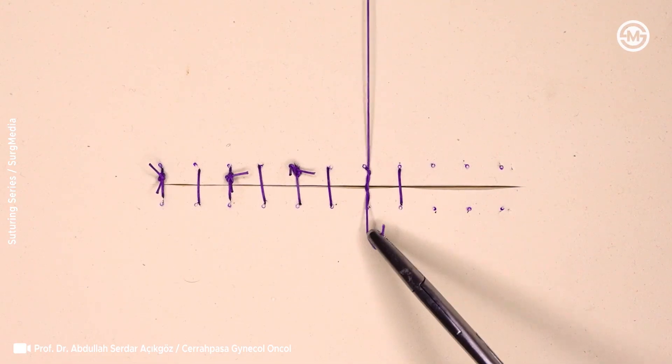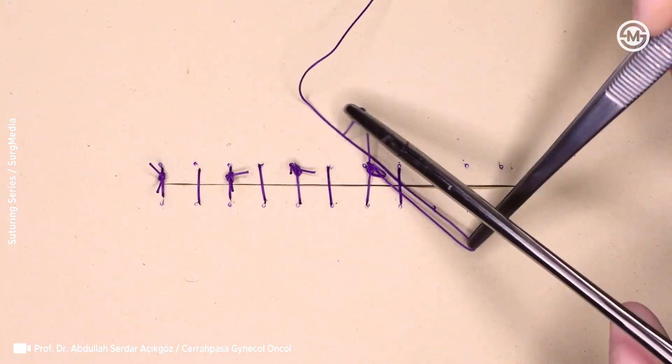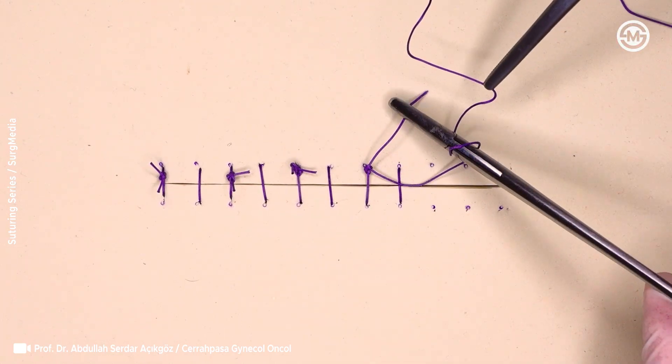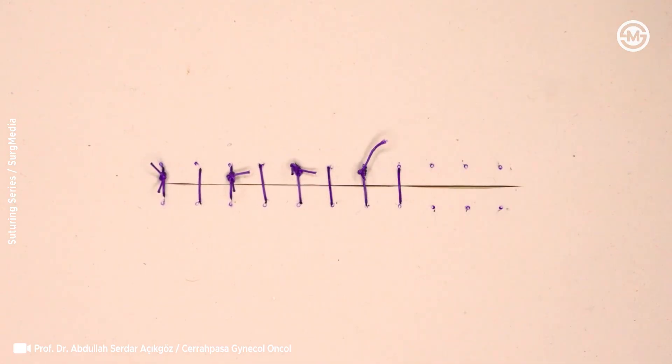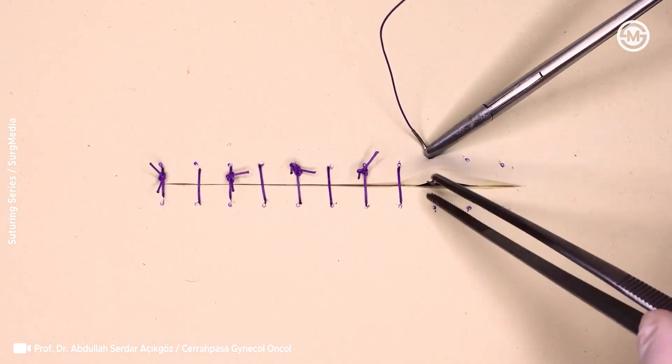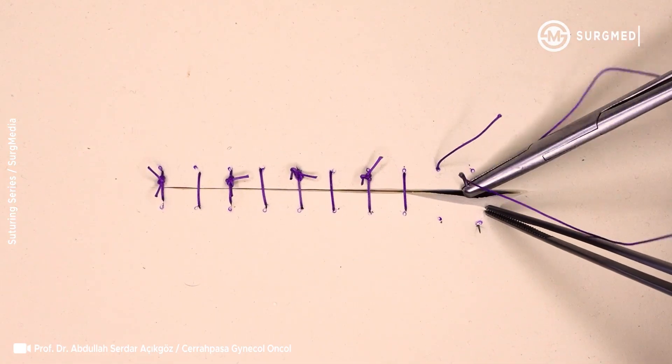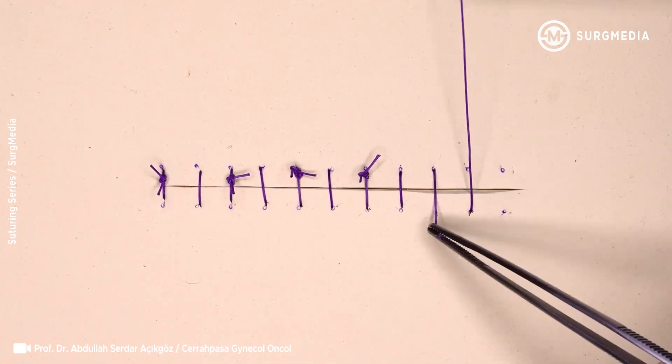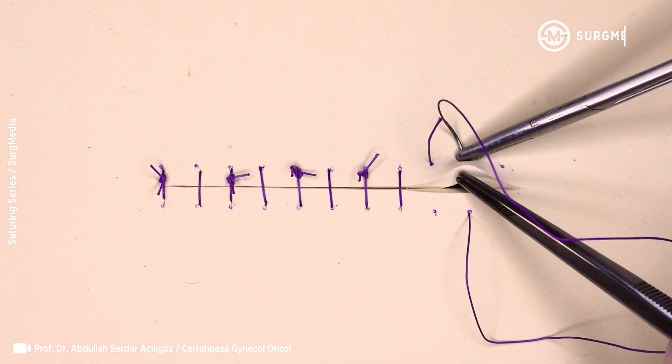Surgeons typically prefer absorbable sutures, such as 4-0 or 5-0 Vicryl or Monocryl, for buried dermal sutures, since these materials provide good tensile strength and reduce the need for suture removal. For superficial skin closure, non-absorbable options like nylon or polypropylene may also be used, depending on the location and cosmetic needs.